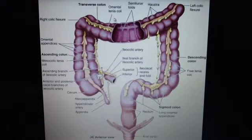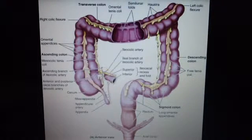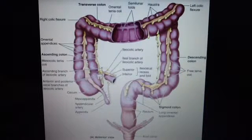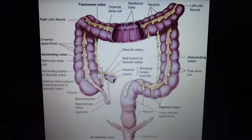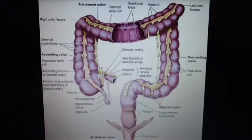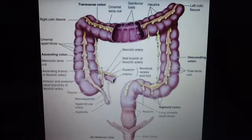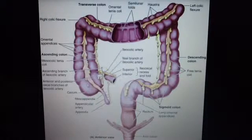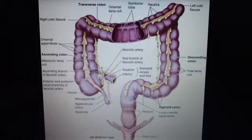So again, we have the teniae coli, which are the thickened bands of longitudinal muscle fibers; the haustra, the pouches of the colon between the teniae; and the omental appendices, the small fatty projections of the colon. And then, of course, the size of it. Remember, this consists of the cecum and the colon — ascending, transverse, descending, sigmoid — and the anal canal.